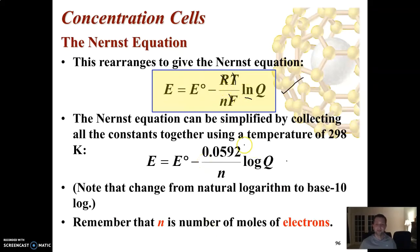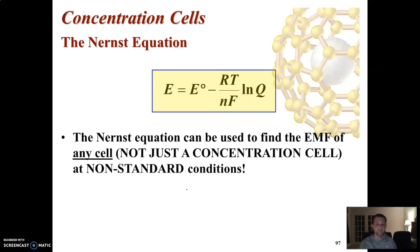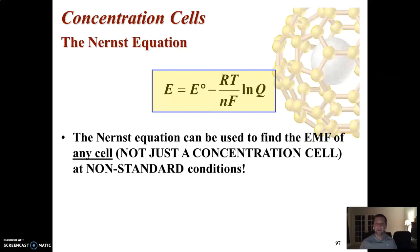The Nernst equation is not just for concentration cells — it can be used to find the EMF of any cell at non-standard conditions. All you need to do is find E°_cell at standard conditions, determine Q, and plug in your values. N is the number of moles of electrons transferred, which we've used before. So remember: if any cell is at non-standard conditions, the Nernst equation applies.